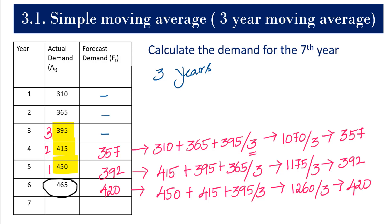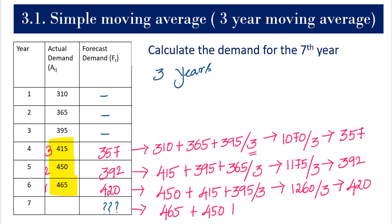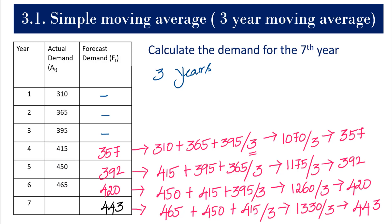For the seventh year, we need the last three-year period: the sixth year, fifth year, and fourth year. If they ask you to calculate using four years of data, you would take four data points and calculate the demand from the fifth year onwards. However many years of data are given, that many years you leave empty at the start.